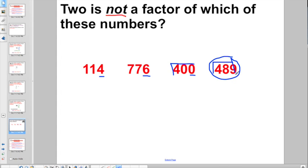Which one is 2 not a factor of? 489. Why? Because of that 9. 9 is an odd digit.